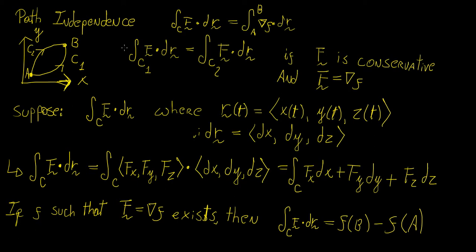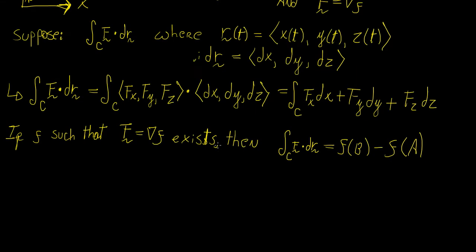The claim of path independence is that if we can find a potential function of f that satisfies the gradient relation, then we can evaluate the line integral by simply taking the value of that function f at the endpoints a and b. We just take this difference and that gives us the value of the line integral, regardless of what path we're taking. This is better explained through an example, and it only works if f is conservative.